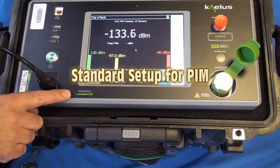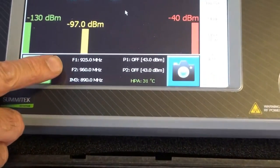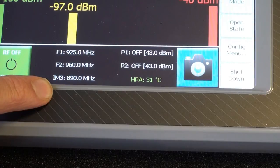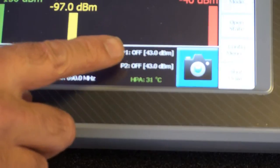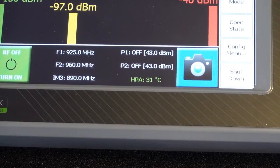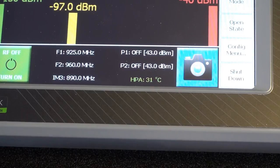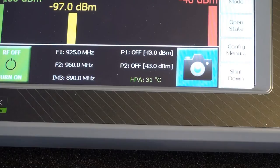For normal measurement purposes, the factory default settings are all that's required, with the Frequency 1 and Frequency 2 at the band edges, which gives you an IM3 at 890 MB. The standard power levels are 43 dBm per tone. These meet the IEC standards for base station testing. This standard setup is what you will normally use for most measurements.